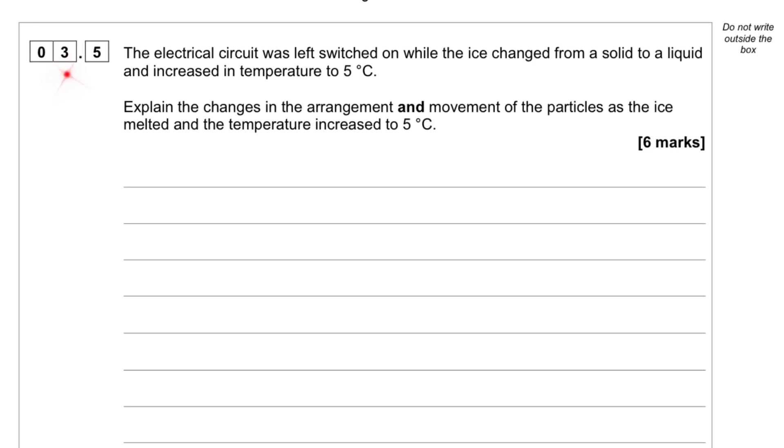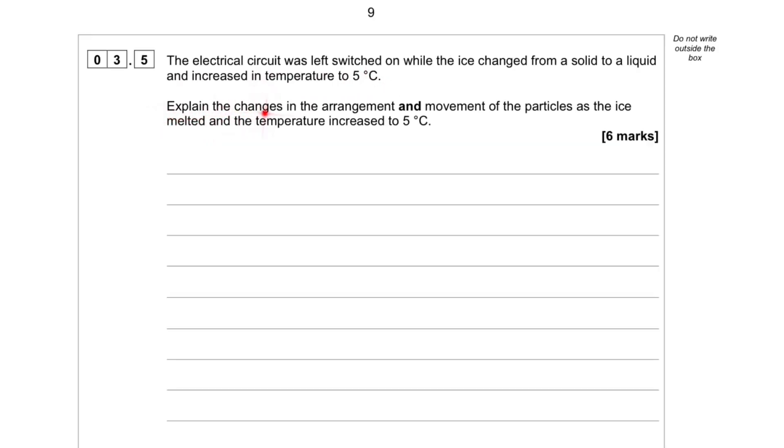Question 3.5. The electric circuit was left switched on while the ice changed from a solid to a liquid and increased in temperature to 5 degrees Celsius. Explain the changes in the arrangement and movement of the particles as the ice melted and the temperature increased to 5 degrees Celsius.